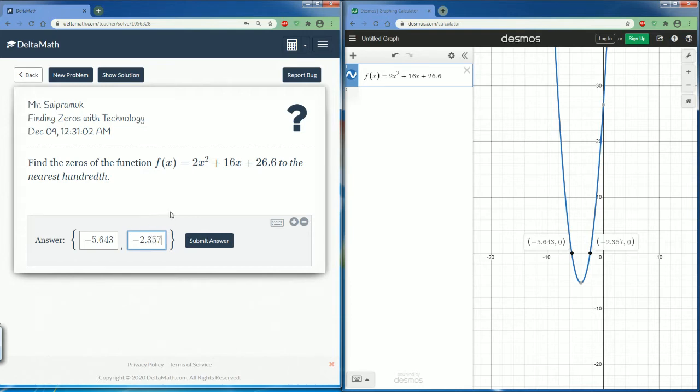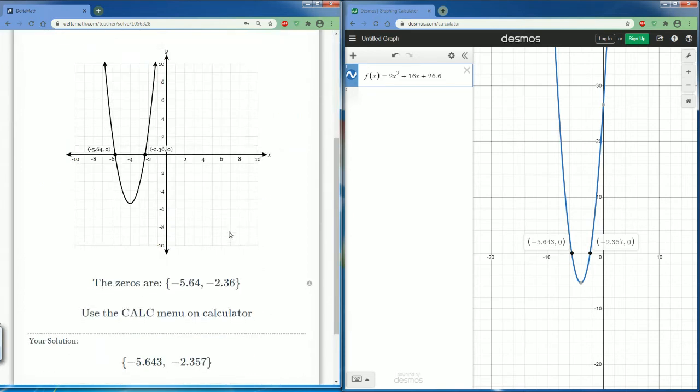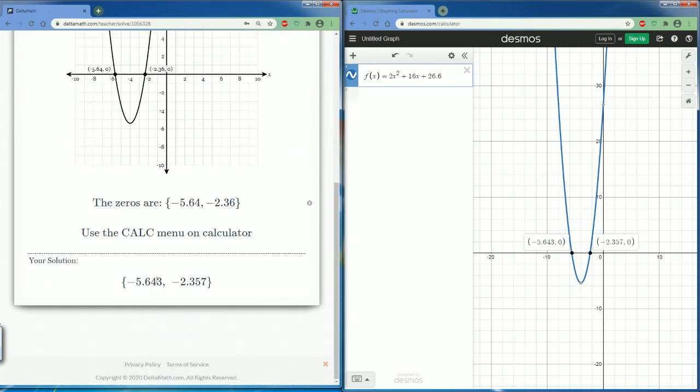Now I'm going to hit submit. This answer is wrong because I forgot to round. If you enter it the way you see it on Desmos, it's going to be wrong. Notice you should round it. So the answers are negative 5.64. You don't need that three. They round it down. The second answer was negative 2.36. Do you see the last number was seven? So this number should be rounded up to negative 2.36.